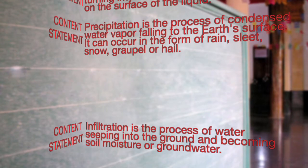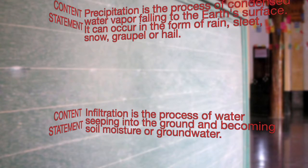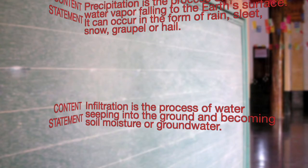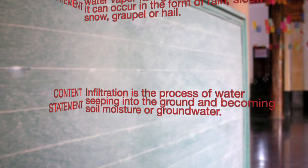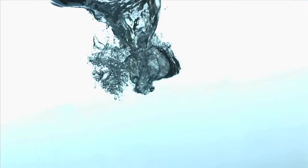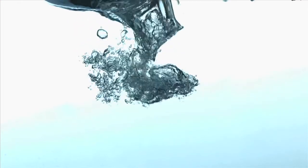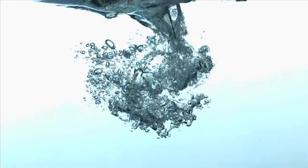Infiltration is the process of water seeping into the ground and becoming soil moisture or groundwater. Thank you for watching — now you know the water cycle! See if you can figure out different variations of a droplet's journey.